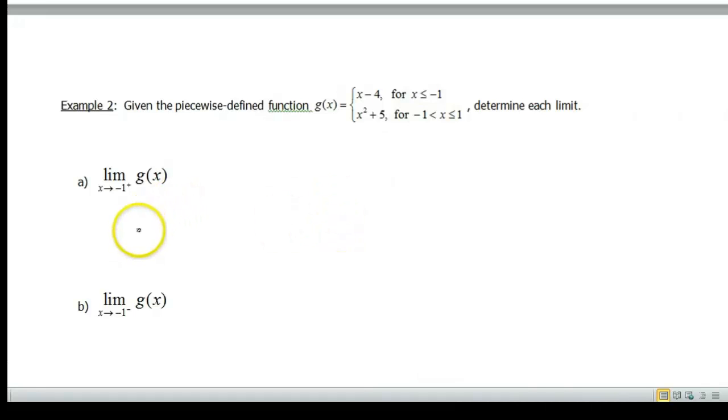Part A asks about the limit as x approaches negative 1. And again, I see a plus sign. That plus sign means from the right. So thinking about negative 1, what kind of numbers are to the right of negative 1? Numbers that are bigger than negative 1. So obviously it makes sense to use the second function for this one.